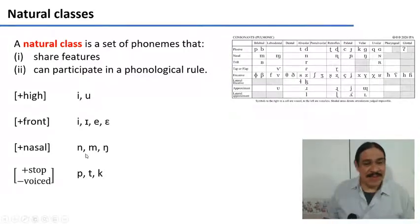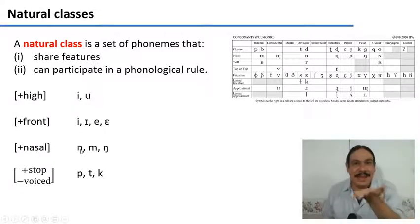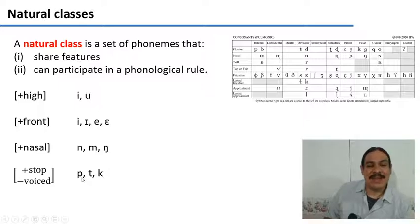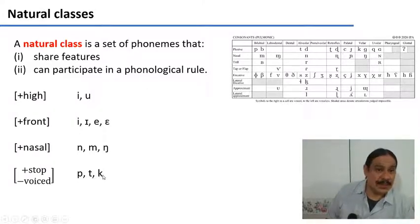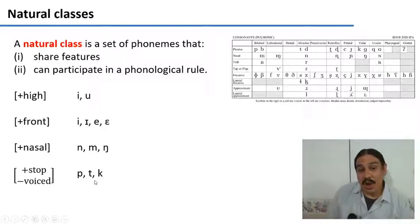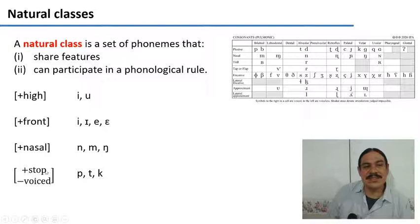What if we had the three sounds N, M, and engma? They could form a natural class defined by the feature [+nasal], quite simply because they're all nasal. How about the sounds P, T, and K? They are different in some ways — P is bilabial, T is alveolar, and K is velar — however, they all share two things in common: they're all stops, so they're [+stop], and they're all voiceless, so they're all [−voiced]. So these two features, [+stop] and [−voiced], describe the natural class formed by P, T, and K.